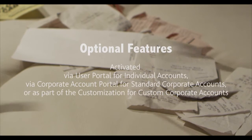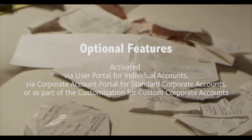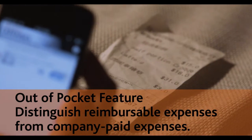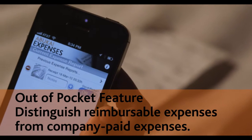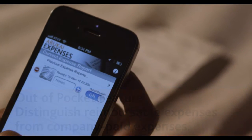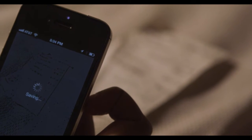There are also several optional features that can be activated if needed. The Out-of-Pocket feature allows users to distinguish reimbursable, out-of-pocket expenses from company paid or corporate card expenses. When the feature is activated, a small switch appears next to each expense. You simply turn the switch off to mark an expense as company paid, or on to mark an expense as reimbursable.